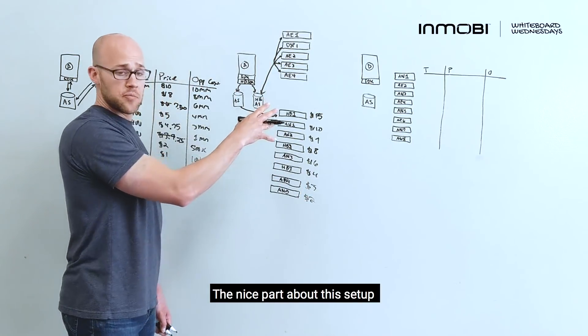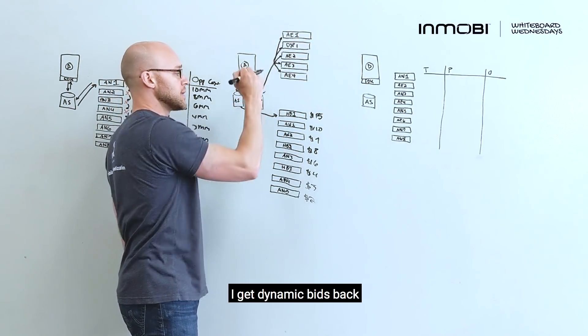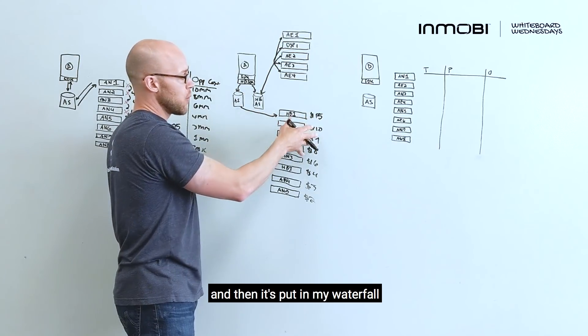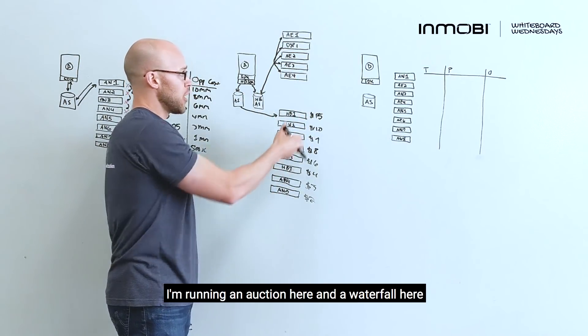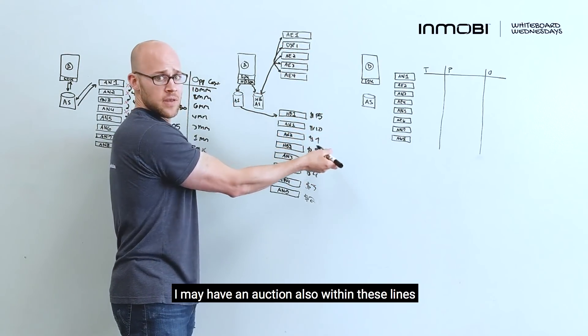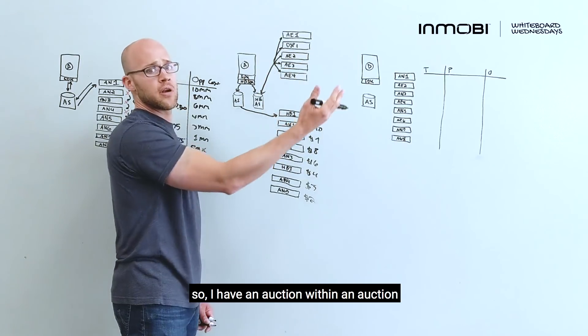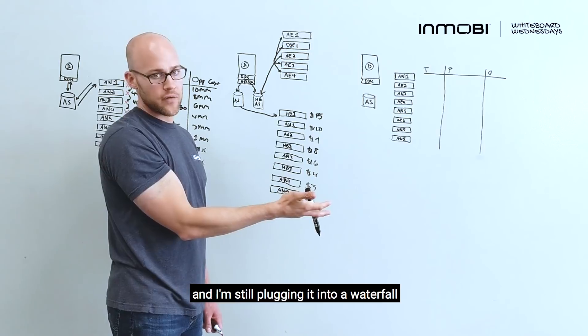The nice part about this setup is that I can now introduce some programmatic partners. They're called simultaneously. I get time and bids back, and then it's put into my waterfall. The downside is that I still have a disjointed system. I'm running an auction here and a waterfall here. I may have an auction also within these lines, so I have an auction within an auction. The other challenge is I'm taking the result of this, and I'm still plugging it into a waterfall.